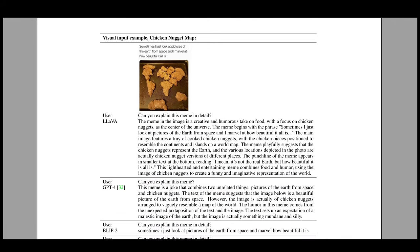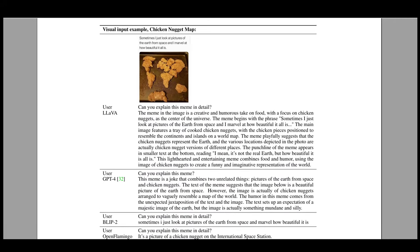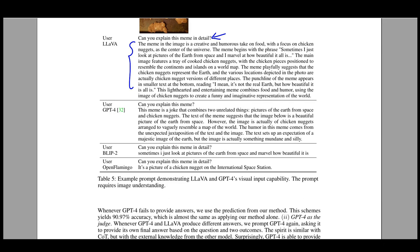So definitely the model has become very conversational and also has improved on the reasoning capabilities. In another example, if you show LAVA this image and ask, can you explain this meme in detail? LAVA goes on to explain in detail with several sentences. But when it comes to BLIP-2 or OpenFlamingo, it just says, sometimes I just look at pictures of the earth from space and marvel how beautiful it is. Or OpenFlamingo says, it's a picture of a chicken nugget on the international space station.